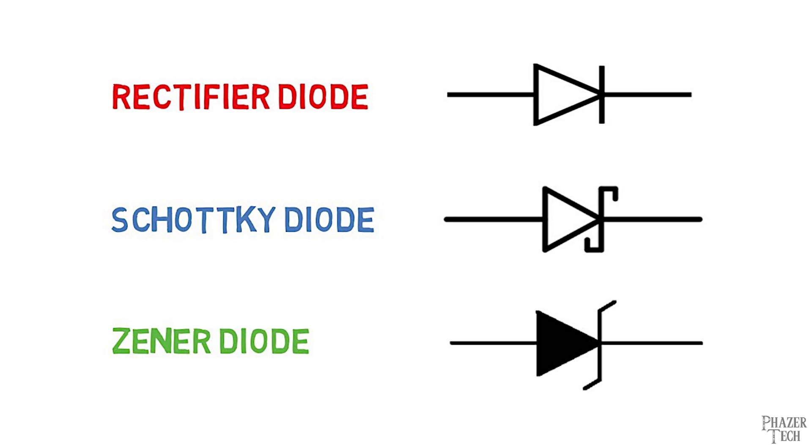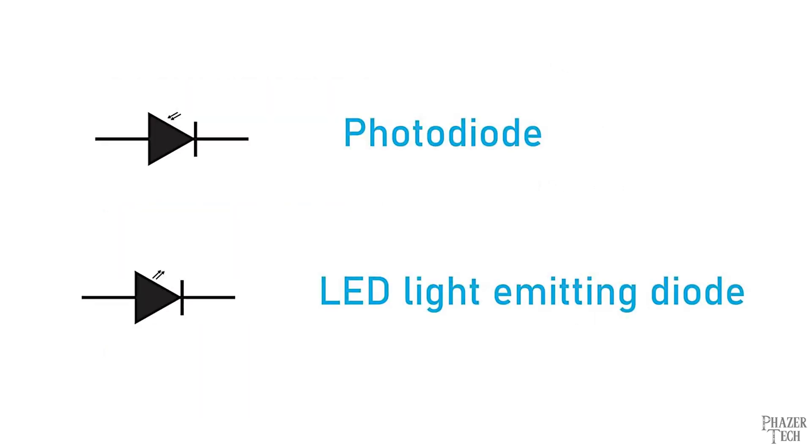Zener diodes are a special type of diode which allows current to flow in the reverse direction once a specific voltage has been reached, and they can be used as a stable voltage reference. Schottky diodes are another type that are similar to rectifier diodes, but they have a lower forward voltage drop and faster switching speeds. There's also photodiodes, which are special diodes that are sensitive to light. They allow current to flow in one direction when exposed to light. And finally, light-emitting diodes, or LEDs for short, are also a type of diode, and they emit light when current flows in the forward direction.